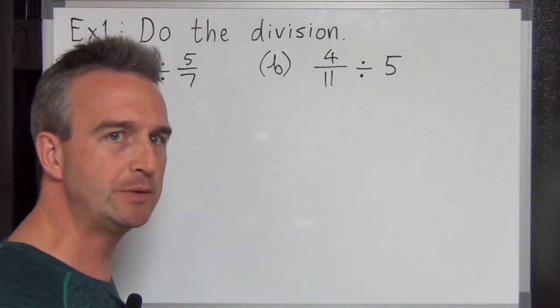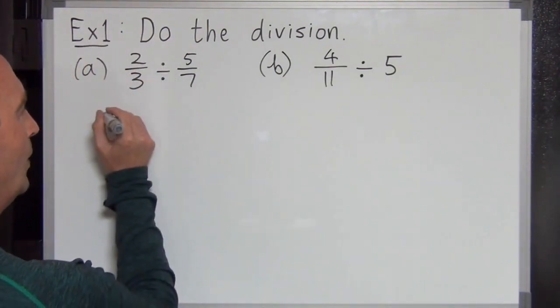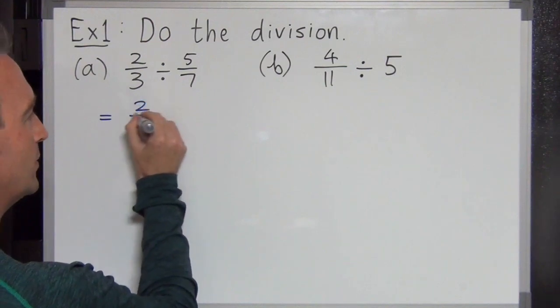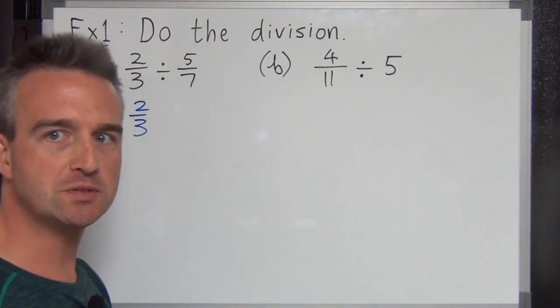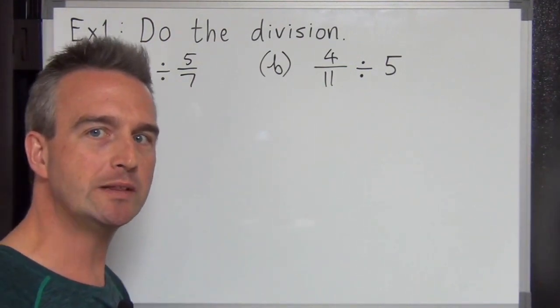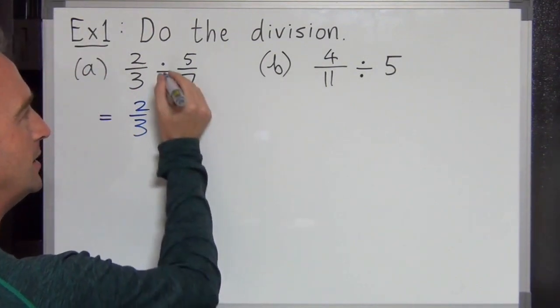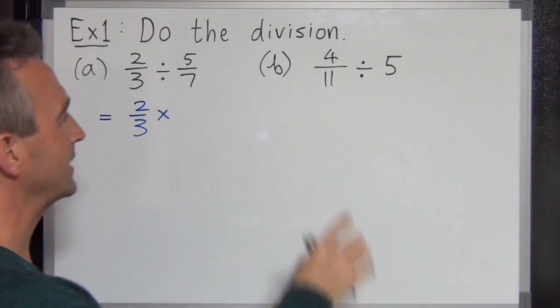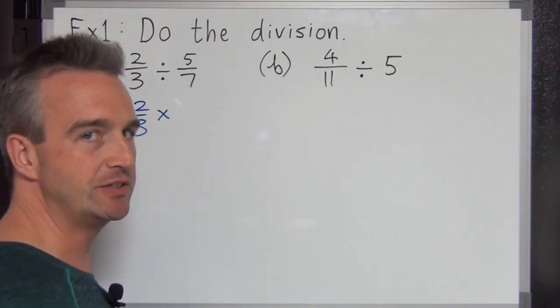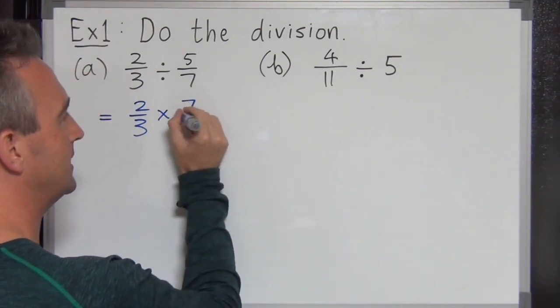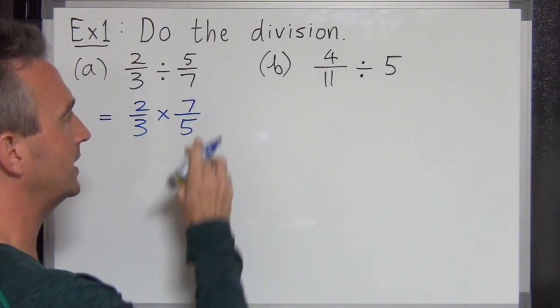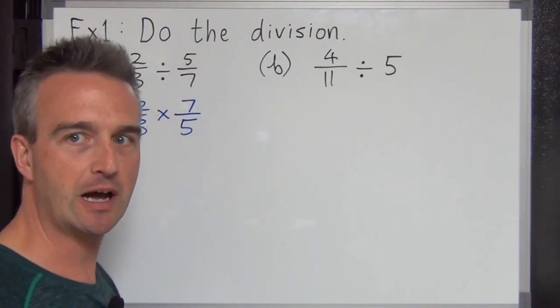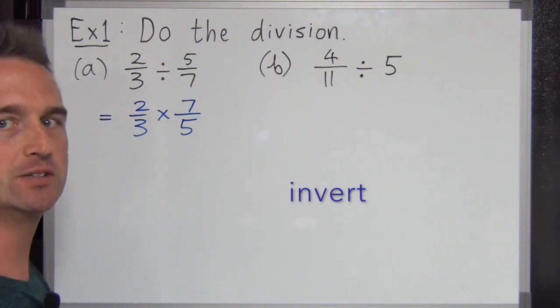So how do we do division of fractions? Well, 2 over 3 - it's very similar to multiplying fractions except we need to do one little step first. What we do is we turn the division sign into a multiplication sign and we turn the second fraction upside down. 7 over 5. Okay, we do the reciprocal. We turn it upside down. We invert it.